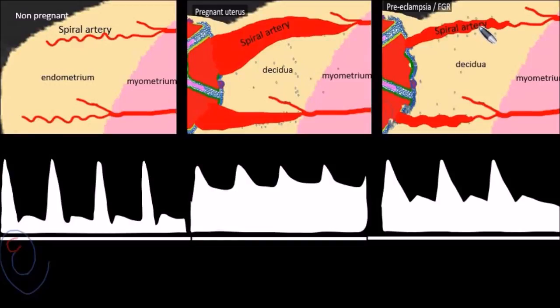With placental diseases like preeclampsia or FGR, you may find an abnormal uterine artery Doppler, which is something in between the non-gravid uterus and the healthy pregnancy.